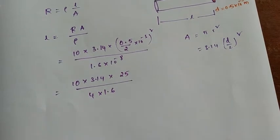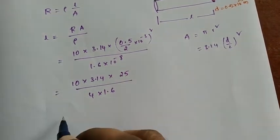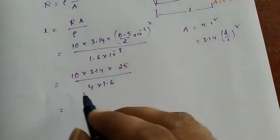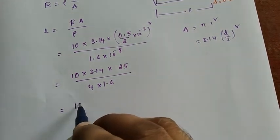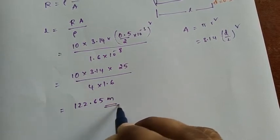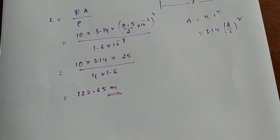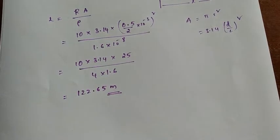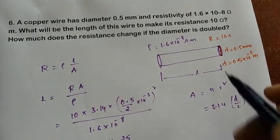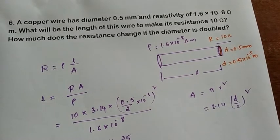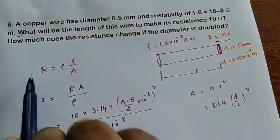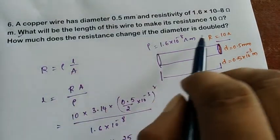Using a calculator, the length comes out to 122.65 meters. So the length of the wire must be 122.65 meters if the resistance is 10 ohms. That completes the first part. Now for the second part: how much does the resistance change if the diameter is doubled?